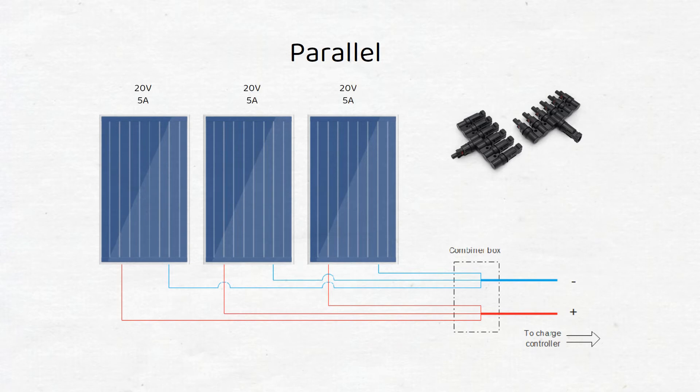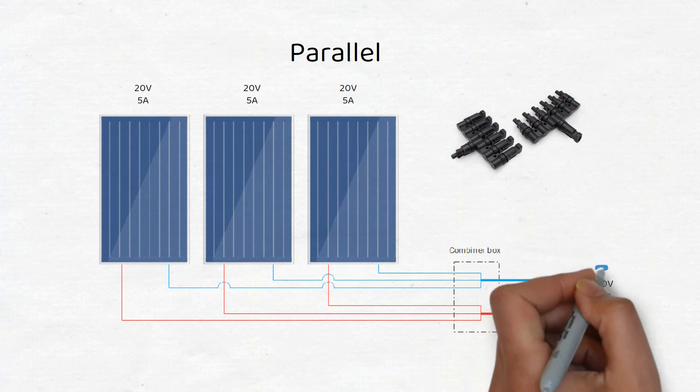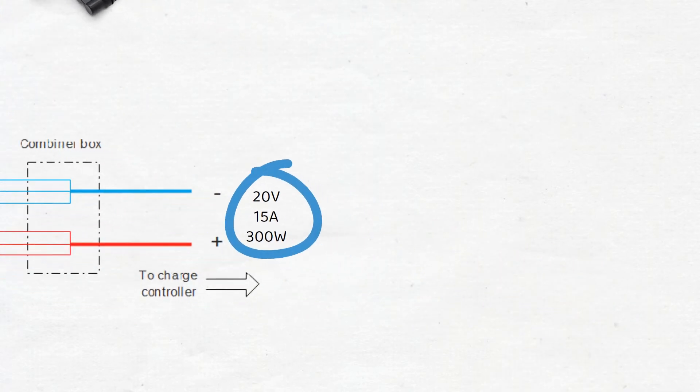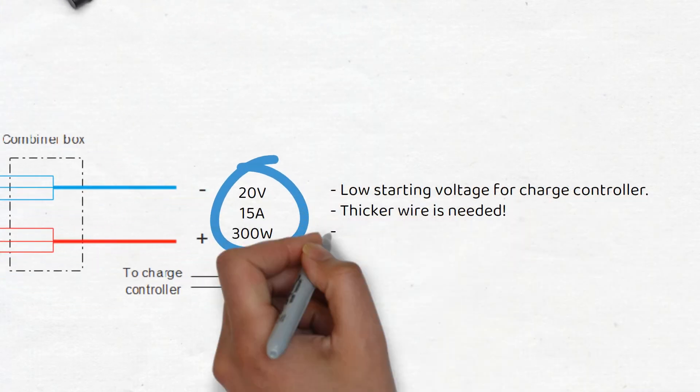If we use the same panel at 20 volts and 5 amps each, we get an output to the charge controller at 20 volts and 15 amps. If you wire in parallel, you need a charge controller that is able to handle the larger input current, which will be more expensive.